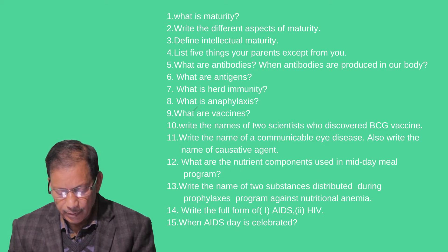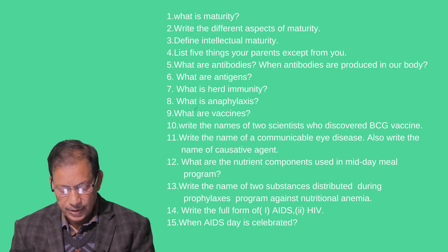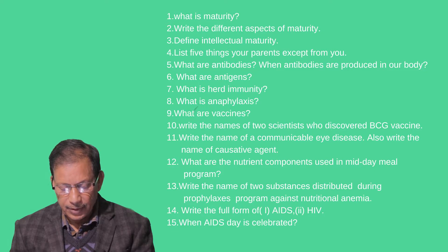What are antibodies, and when are antibodies produced in our body? What are antigens? What is herd immunity? What is anaphylaxis? What are vaccines? Write the names of the two scientists who discovered the BCG vaccine. Write the name of a communicable eye disease and also write the name of its causative agent.